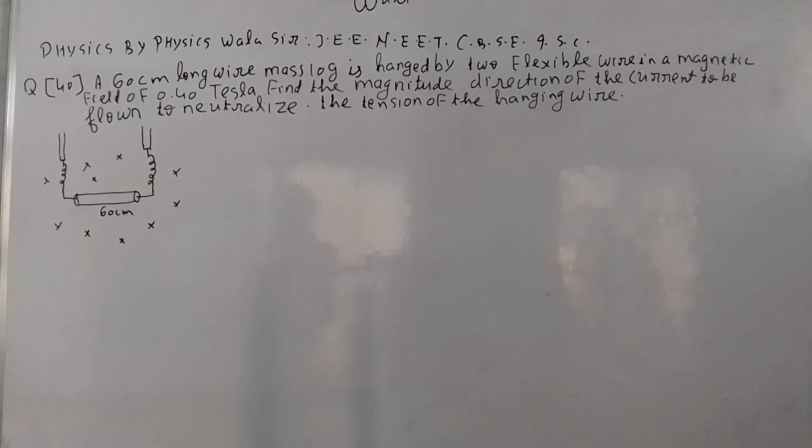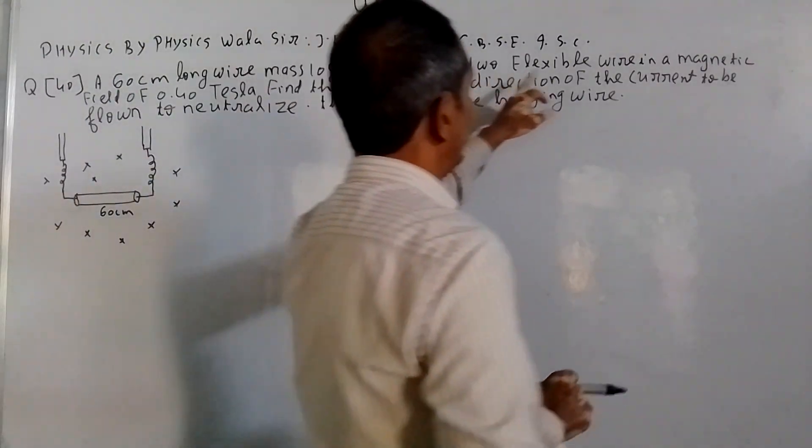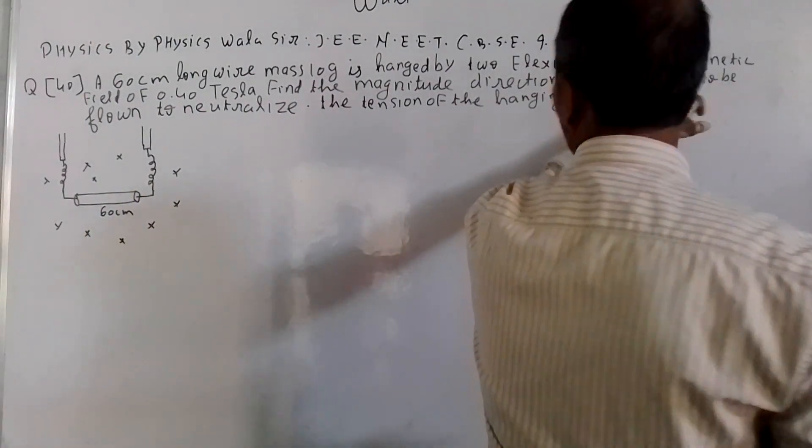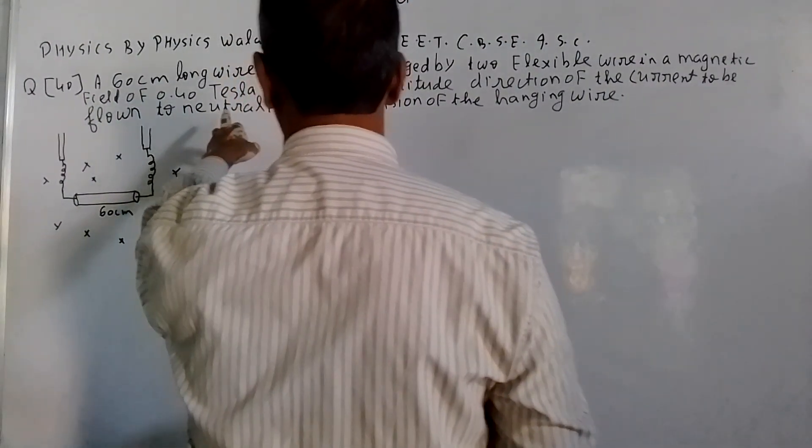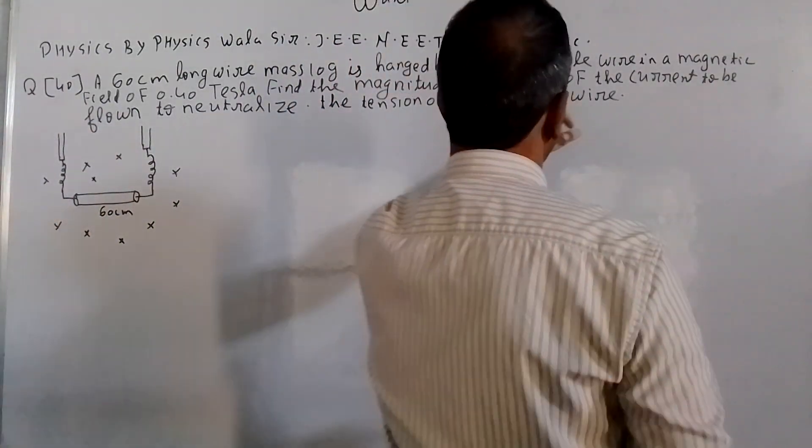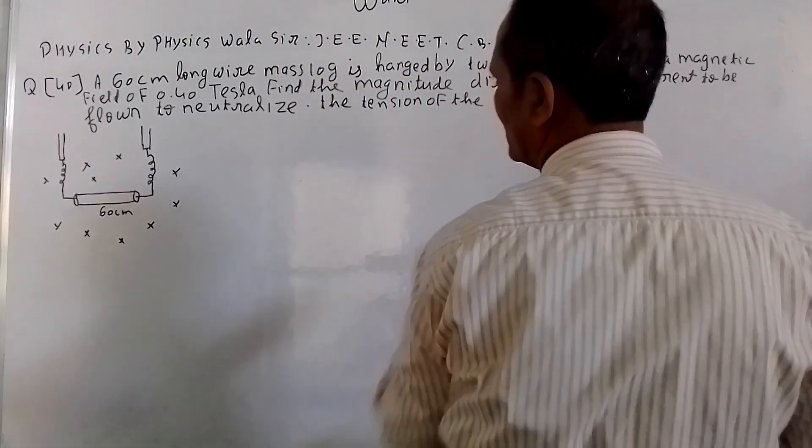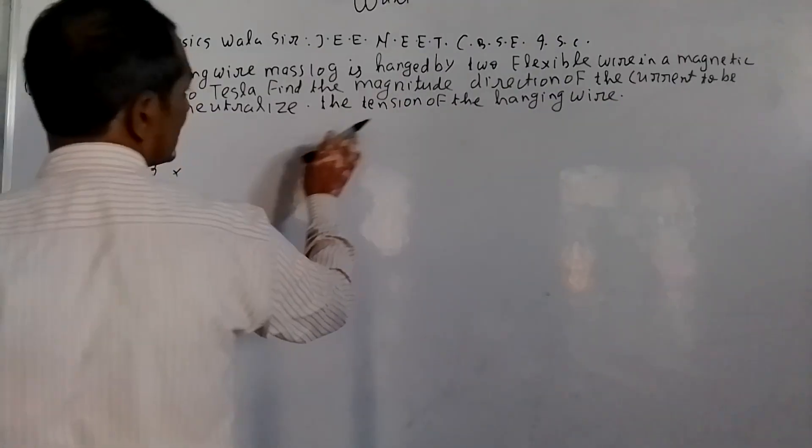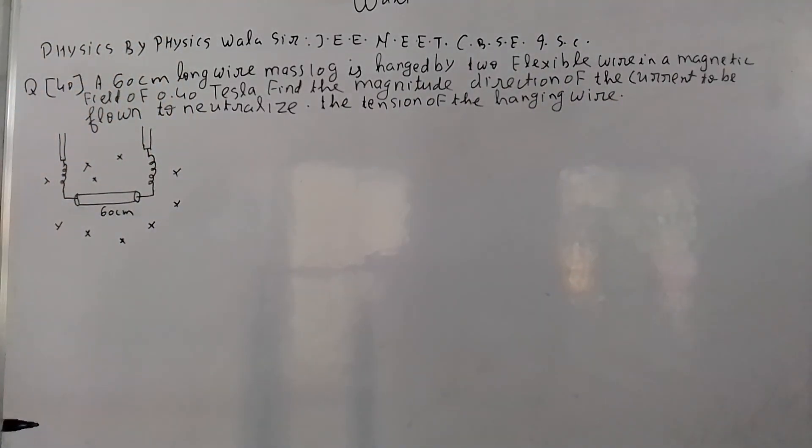When a 60 cm long wire with mass 10 grams is hanged by two flexible wires in a magnetic field of 0.4 Tesla, find the magnitude and direction of the current to be applied to neutralize the tension of the hanging wire.